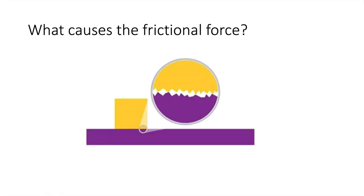Friction occurs when two surfaces come into contact. With very rough surfaces, only a small area is actually in contact, so there tends to be less friction. With very smooth surfaces, there is a large contact area and atoms in the two materials can effectively cold-weld together, making sliding very difficult.